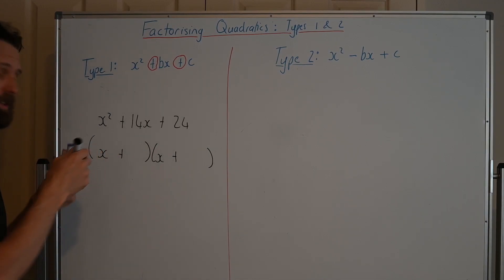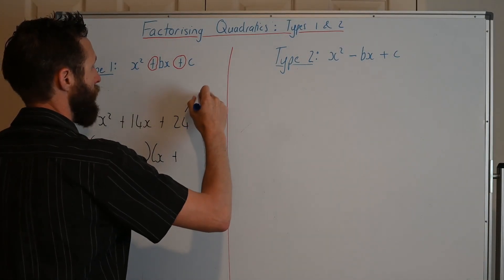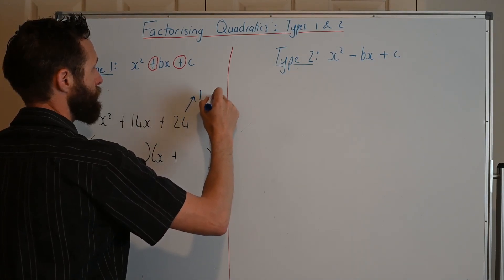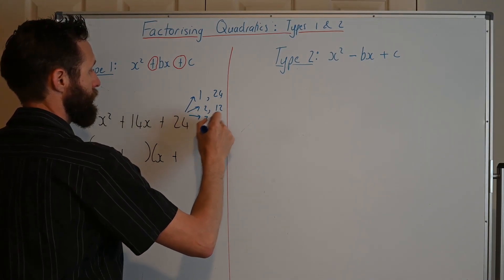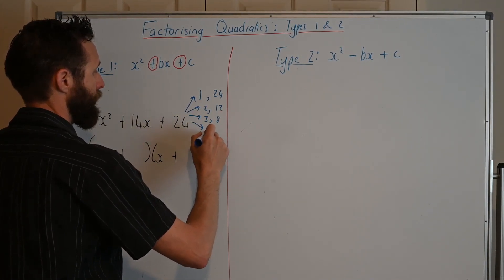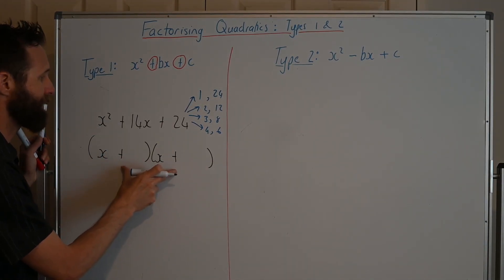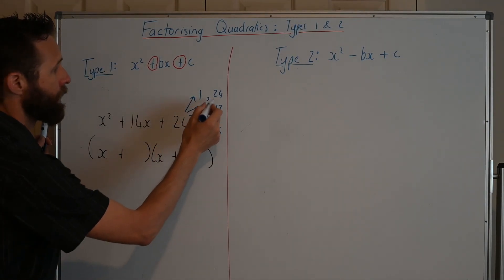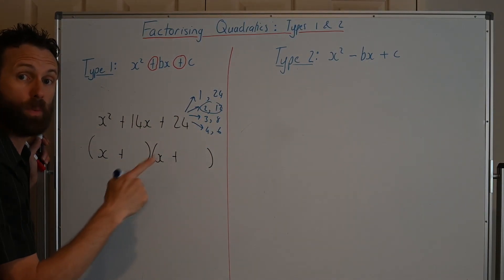Now, we look at the factors of 24. What are the factors of 24? Well, we've got 1 and 24. We've got 2 and 12. We've got 3 and 8. And we've got 4 and 6. And we've got to find a factor pair where they're both positive and they add to 14. 1 and 24 is 25. 2 and 12 looks to be it. 2 plus 12 is 14.